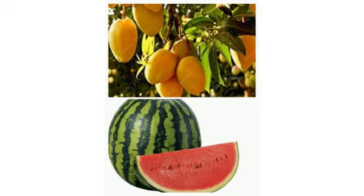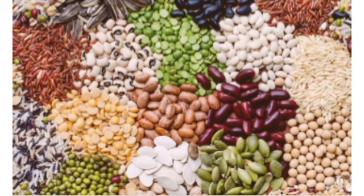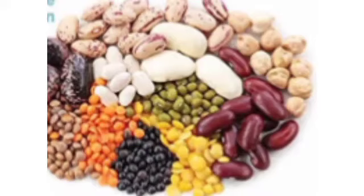We do not eat the seeds of fruits like apples and pears. Seeds are different in shapes, sizes and colors. We eat some seeds like pulses, wheat and grain.